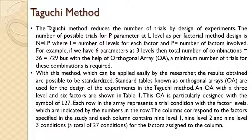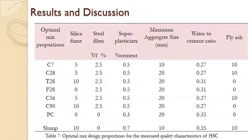The column corresponds to the factors specified in the study, and each column contains 9 level-1, 9 level-2, and 9 level-3 conditions — a total of 27 conditions for the factors assigned to the column. This table shows the factors used in this design experiment, along with the optimal mix proportion, the compressive strength, the tensile strength, the production cost, and also the slump.